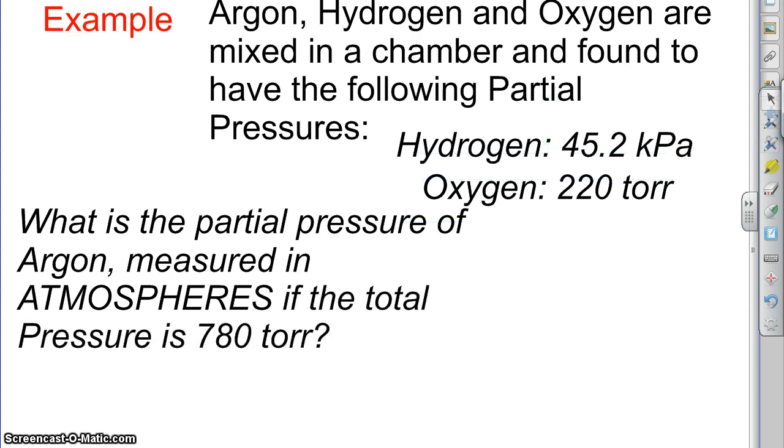We have a mixture of gases: argon, hydrogen, and oxygen in a chamber, found to have the following partial pressures. What is the partial pressure of the argon measured in atmospheres if the total pressure is 780 torr?